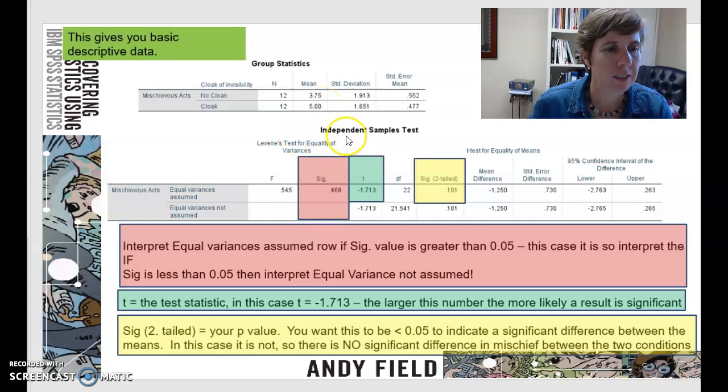So you also get this independent samples t-test table, and there's a couple of pieces of information you want to look at. The very first thing you want to look at is this first SIG value, because we said that one of the assumptions of a t-test is that the data are normally distributed. So you have two choices here. You've got equal variances assumed, equal variances not assumed.